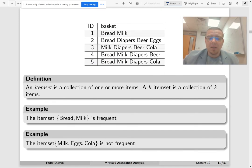But if you look at milk, eggs, and cola, this is also an itemset. Here k is 2, here k is 3. But milk, eggs, and cola do not appear together. They never appear together, which means it is not a frequent itemset.